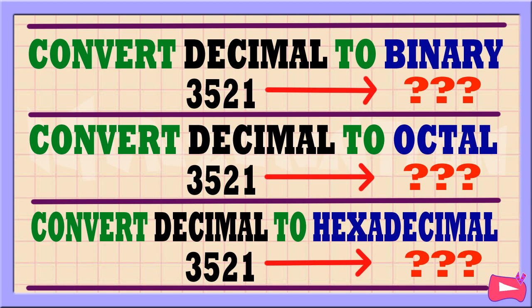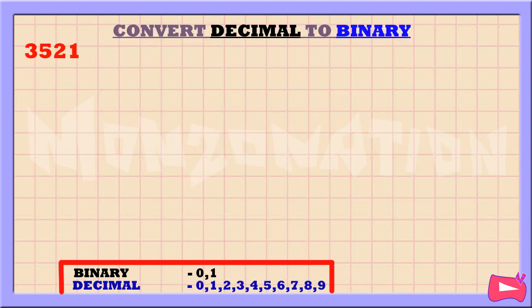This video explains how to convert from decimal to binary, decimal to octal, and decimal to hexadecimal. Let's convert the decimal number 3521 to binary.